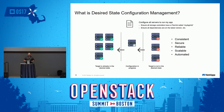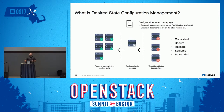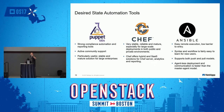Desired state configuration gives us that ability at both the infrastructure level and the application level to create consistent, scalable, reliable, automated deployments. I know that if I deploy my application into production it's going to deploy the same as when I deployed it into test, and the same as when I deployed it on my laptop for development.